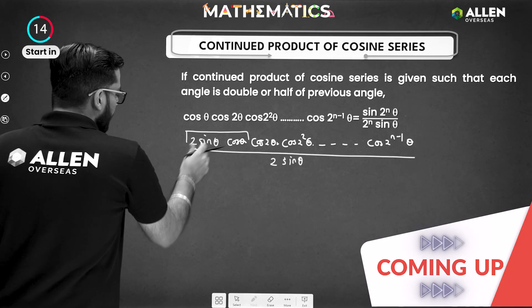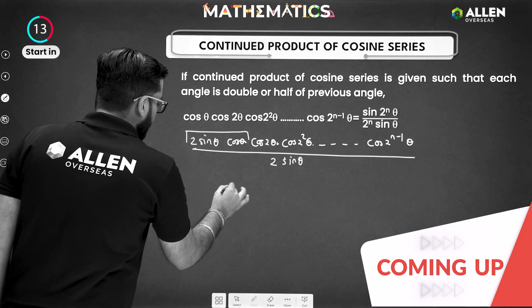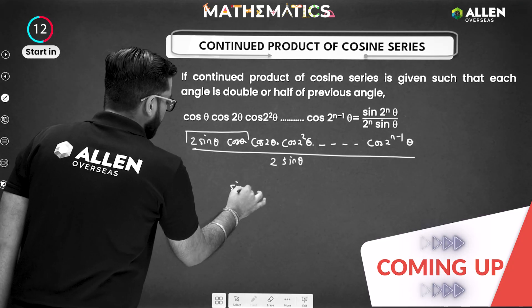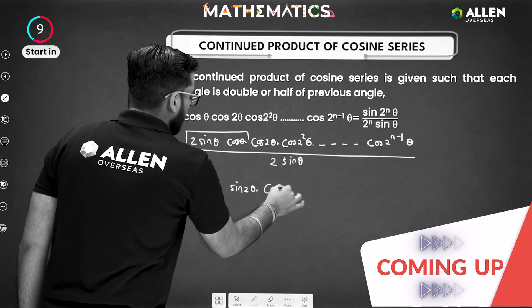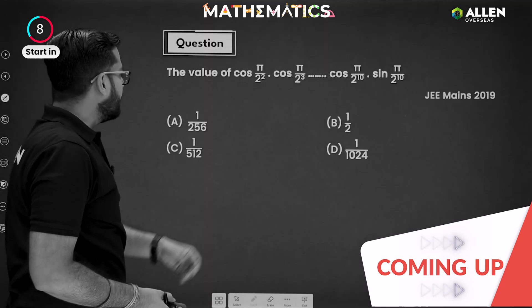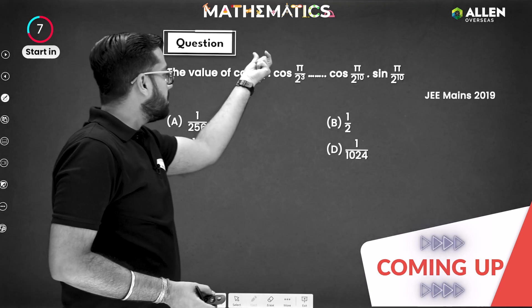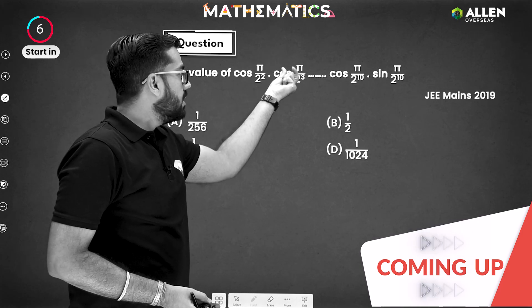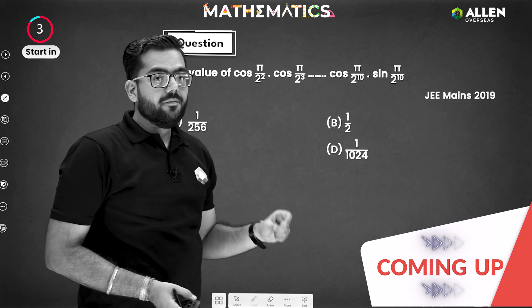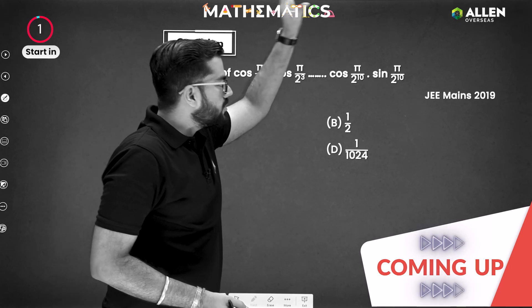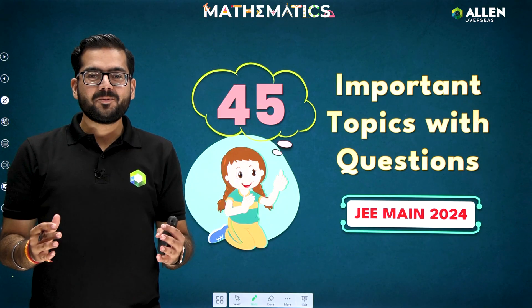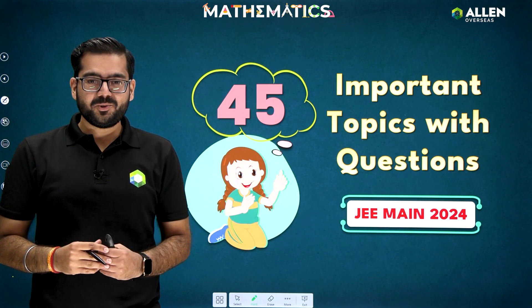We are going to follow this pattern: sin 2θ, cos 2θ — that is the value of cos(π/2) squared, cos(π/2) cubed, and so on. We need to go till cos(π/2) raised to 10.